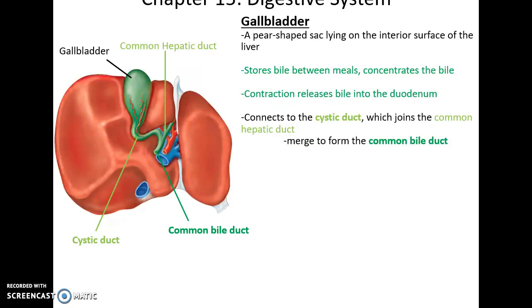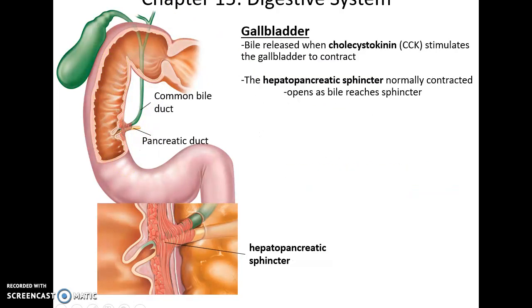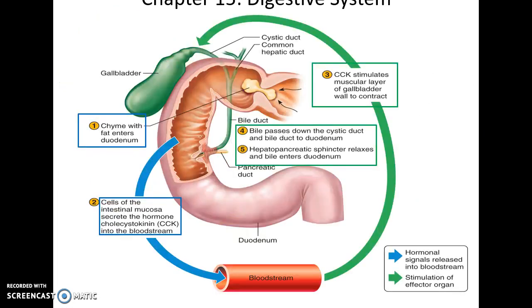The gallbladder stores bile and releases it when necessary through the cystic duct into the common bile duct. It is a pear-shaped organ, and the common bile duct connects to the pancreatic duct as they secrete their substances into the duodenum. The gallbladder is stimulated by the cholecystokinin hormone, which travels through the bloodstream and causes the gallbladder to constrict and release its bile. And that's it for this part of the lecture.